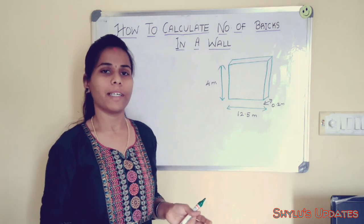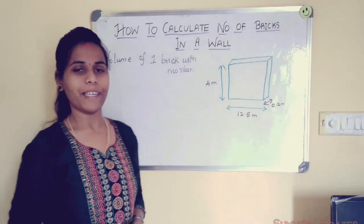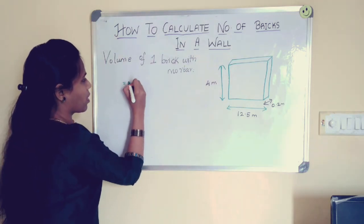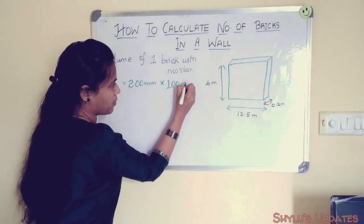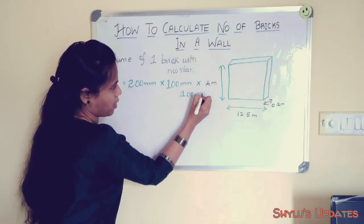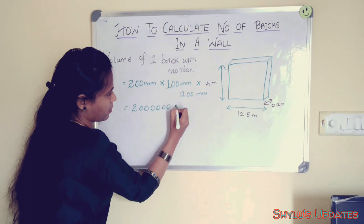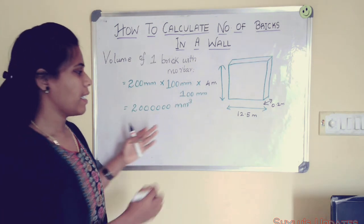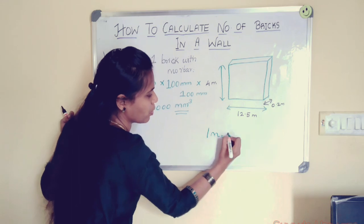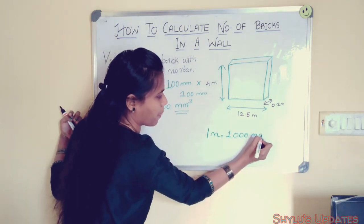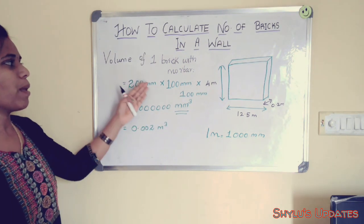In the second step, we find the volume of one brick with mortar. Volume of one brick with mortar equals 200 mm × 100 mm × 100 mm. Converting from mm³ to m³ — since 1 meter equals 1000 mm — we get 0.002 cubic meters. This is the volume of one brick with mortar.